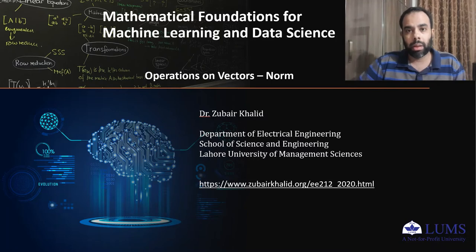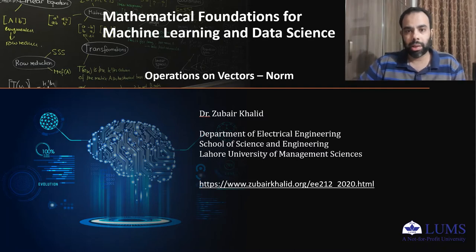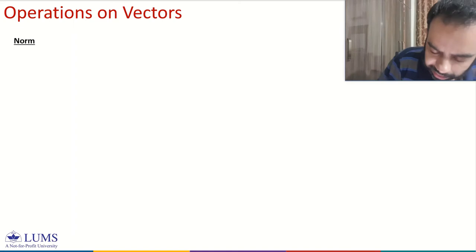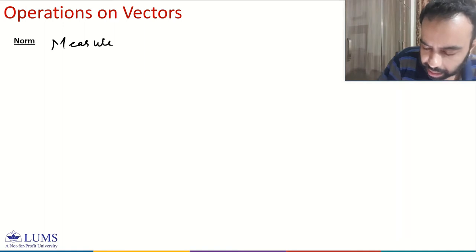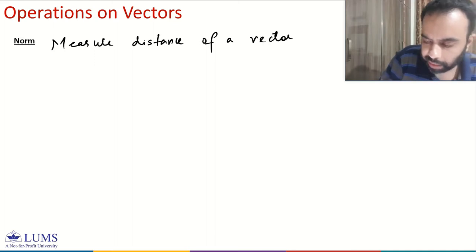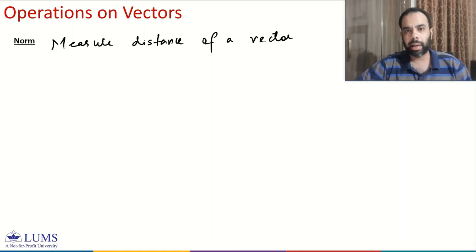Today we will continue our discussion on operations on vectors and we will talk about the norm of a vector. We will start with a very basic definition of norm and then build sequentially. Norm is a measure of distance of a vector from the origin — it quantifies the strength of a vector.